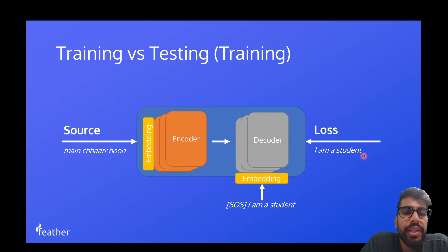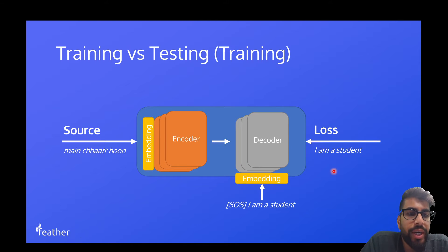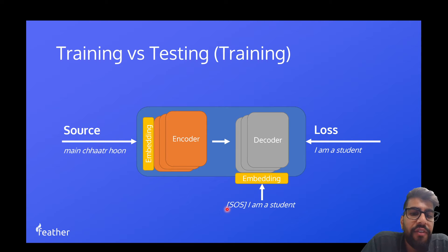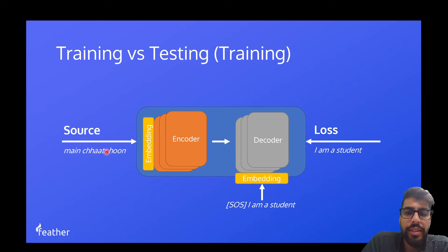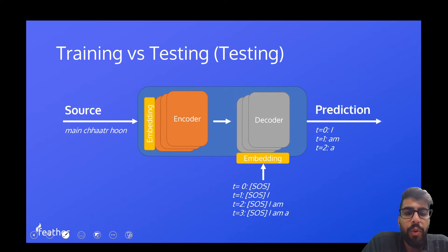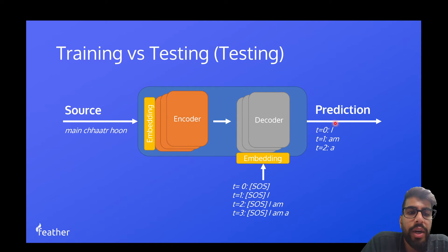During training, we have access to this target sentence. For efficiency purposes, we're going to be feeding in the whole target sentence at once. Here we have a start-of-sequence token. In the real world, we want to feed in the start-of-sequence token along with the whole source sentence — this will be the first iteration of the decoder — and we want to predict the word 'I' from just the source sentence and the start-of-sequence token.